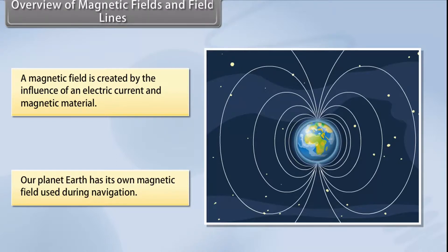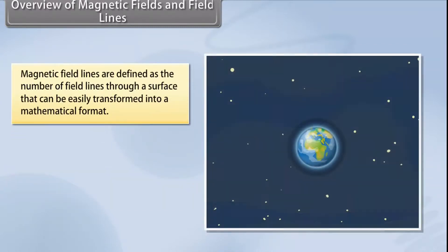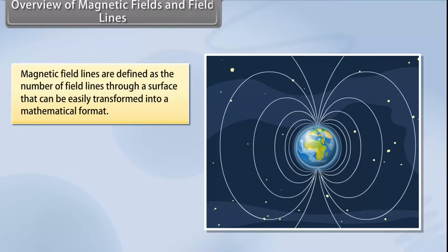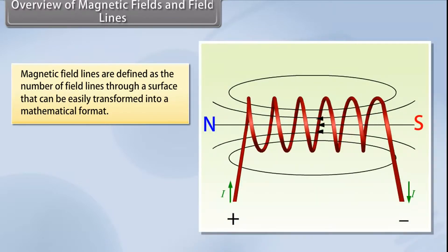Magnetic field lines can be compared to the constant altitude lines that are visible on a map. Magnetic field lines help in stating simple concepts of magnetism easily. These are defined as the number of field lines through a surface, and can be easily transformed into a mathematical format.